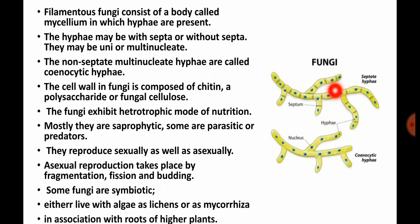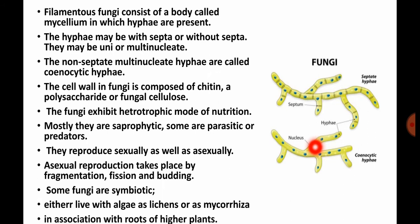Hyphae are of two types: septate hyphae and coenocytic (aseptate) hyphae. If septa are present, separating each nucleus, it is called septate hyphae. If septa are absent and nuclei are freely arranged, it is called coenocytic hyphae. The cell wall is composed of chitin, a polysaccharide also known as fungal cellulose.